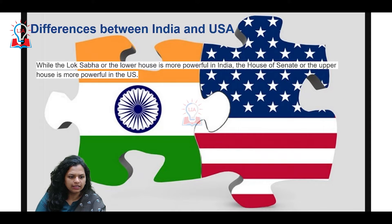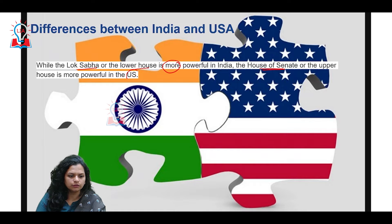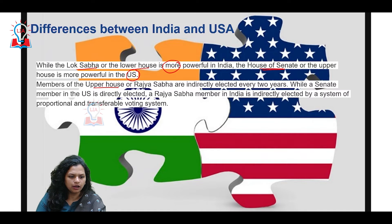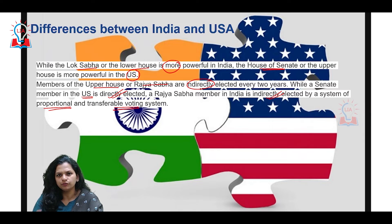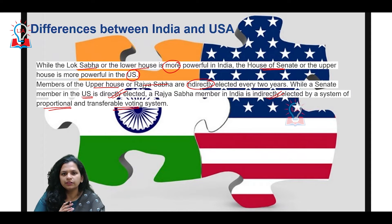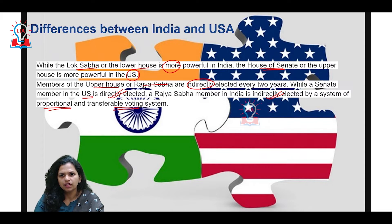While the Lok Sabha is more powerful in India, the Senate is more powerful in the United States. Members of the upper house — the Rajya Sabha in India — are indirectly elected through a system of proportional representation by means of single transferable vote. In the United States, Senate members are directly elected. This difference in method and population criteria gives different kinds of importance to the Indian parliamentary system vis-à-vis the US system.